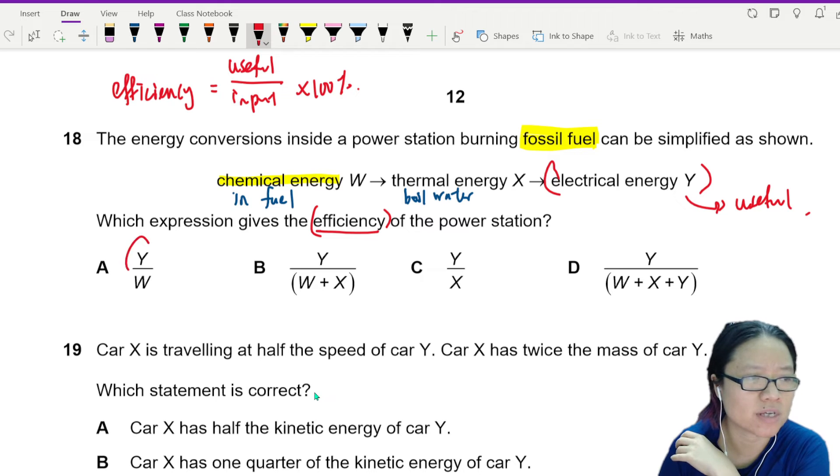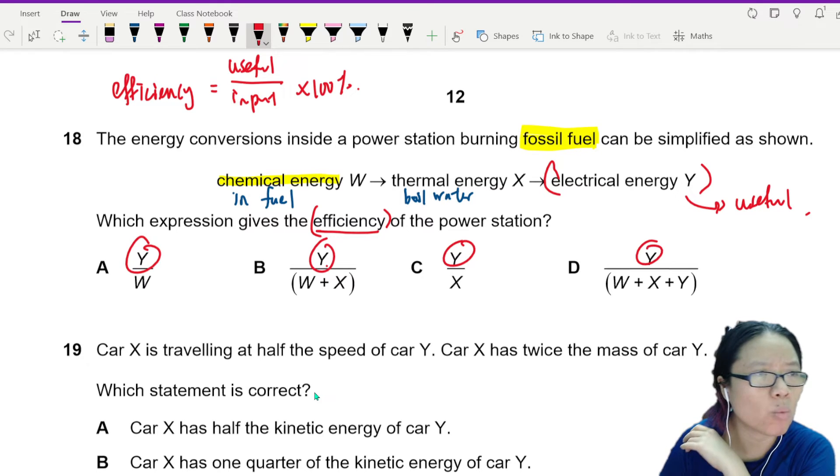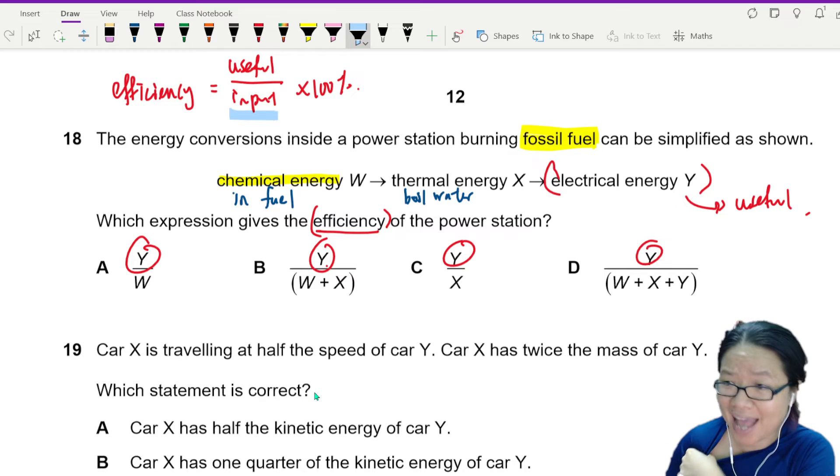So that means we can see why it's Y on top. But what is the input? Is it W or is it X? Or is it W plus X?